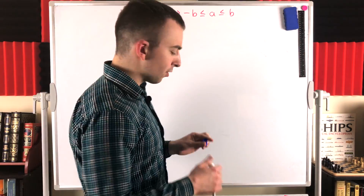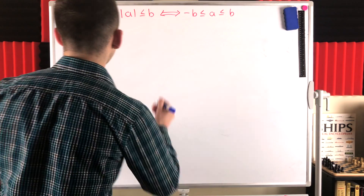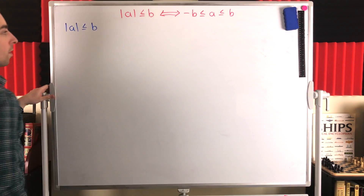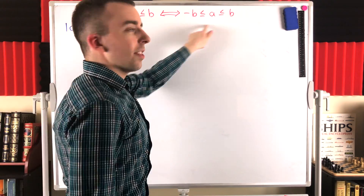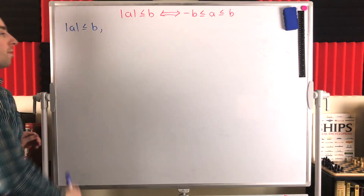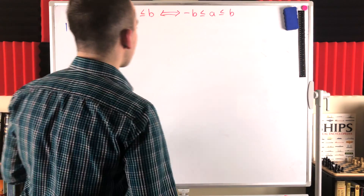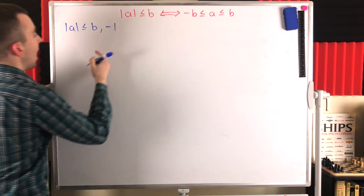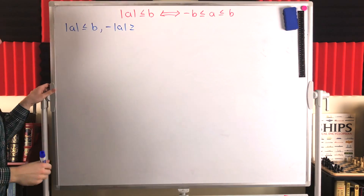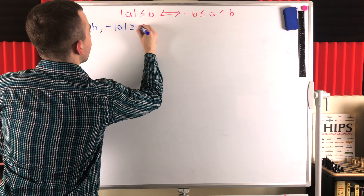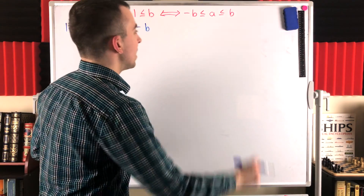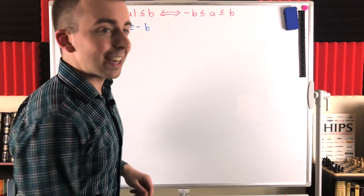It's a pretty straightforward proof, so let's just get into it with the first direction. I'll write this in blue. We're going to assume that the absolute value of A is less than or equal to B and we're going to show that this must be true as a result. For starters, we can multiply both sides of this inequality by negative 1 in order to get another relationship for free. So we've got that negative absolute value of A is greater than or equal to — flipping the inequality since we're multiplying by negative 1 — is greater than or equal to negative B.